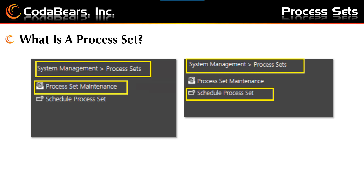The path to create a process set will follow the picture shown on the left. You'll move into System Management, Process Sets, and then select the Process Set Maintenance menu item. The path to schedule a process set will follow the picture shown on the right. Again, you'll go into System Management, Process Sets, but this time you'll choose the menu item called Schedule Process Set.